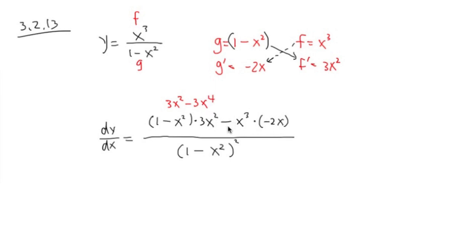And here we have negative times the negative, we get positive. x to the third power times 2x, we get 2x to the fourth power.